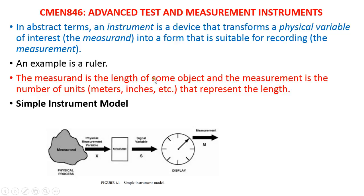Length is one of the seven fundamental quantities in physics. The physical variable we are measuring is expressed in a suitable form using a unit — meters, kilometers, centimeters, or inches. Measuring instruments are of different types; we have the simpler ones and more complex ones.